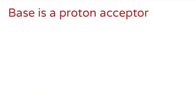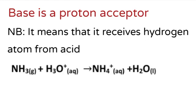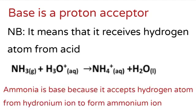From there we have a base. A base is defined as a proton acceptor. When we say a proton acceptor, we mean it receives a hydrogen atom from an acid. Look at the equation: ammonia plus hydronium ion. In this equation, ammonia is the base, because it accepts, that is it receives, a hydrogen atom from hydronium ion to form ammonium ion.